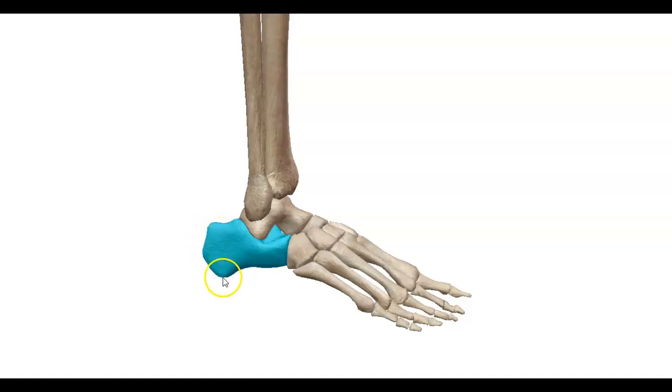The back of the calcaneus bone forms the heel of the foot. Now if you look at the front paw of the dog, it sits on a bone that's shaped like a cube, so we call this the cuboidal bone.